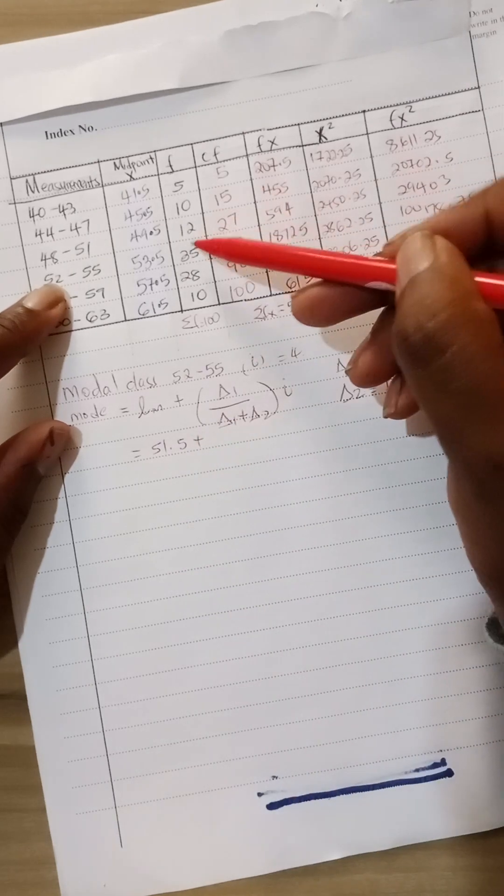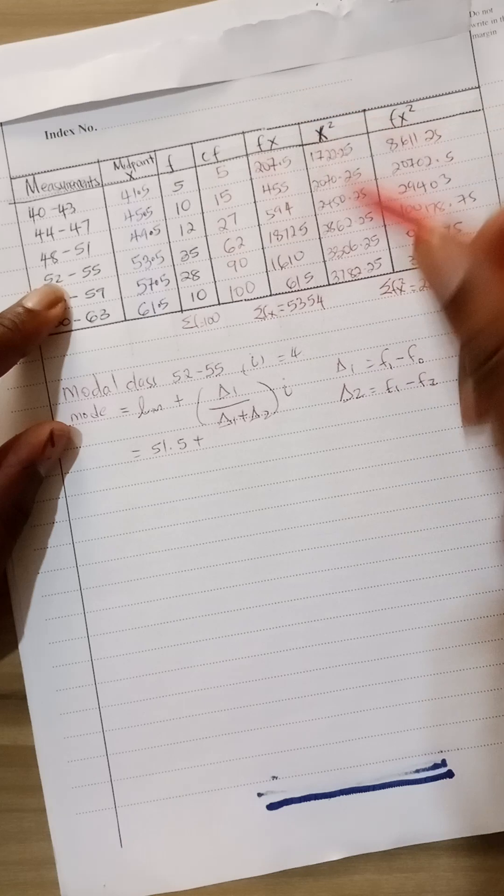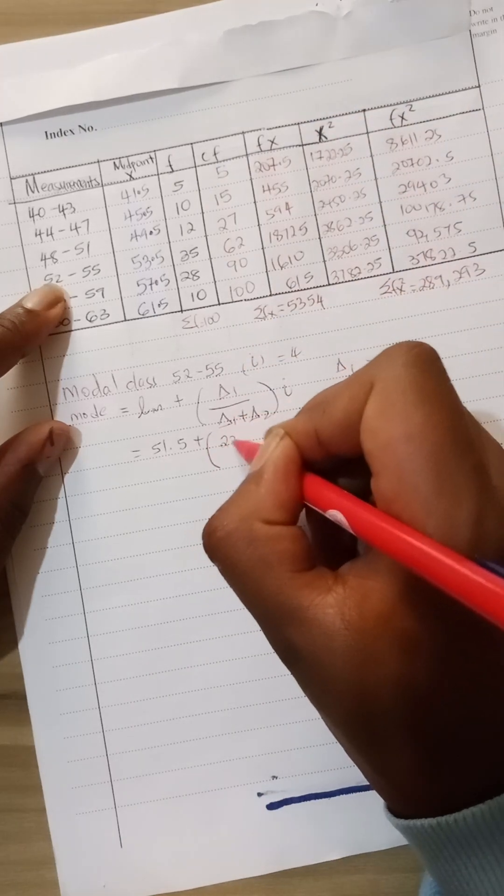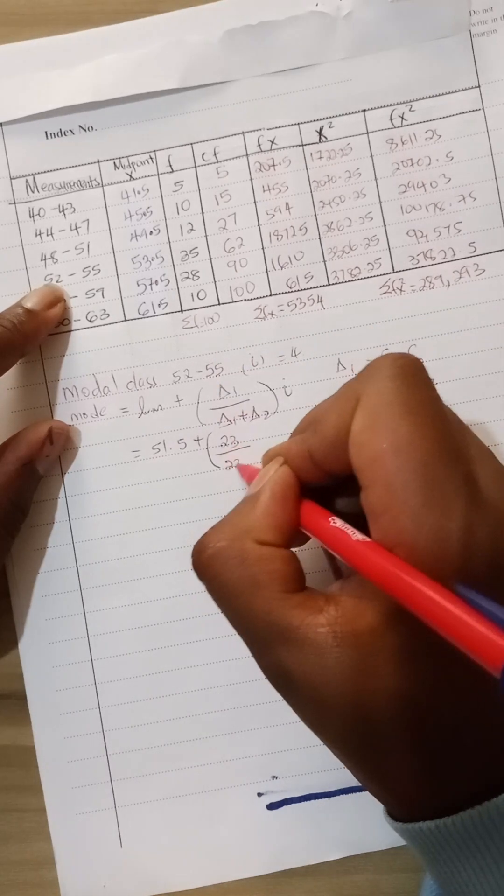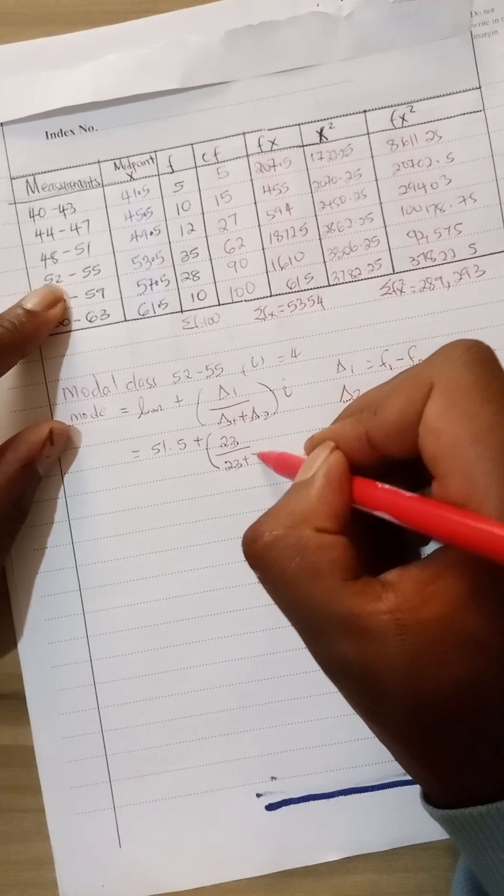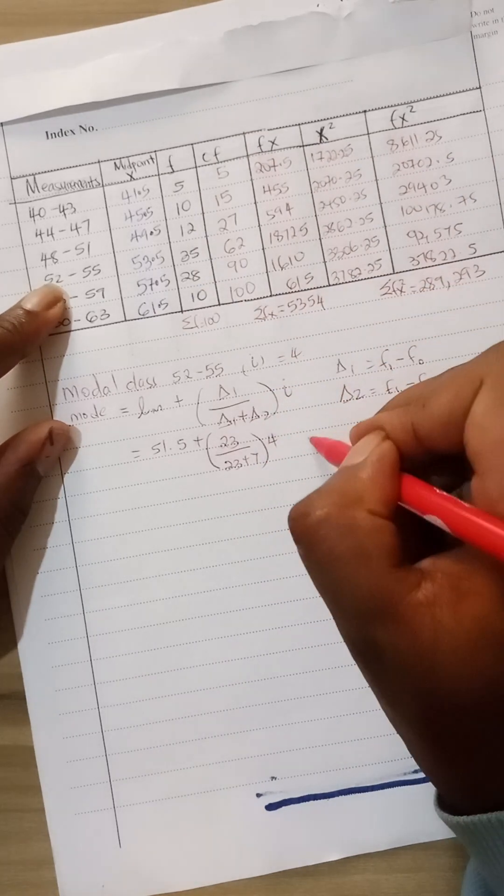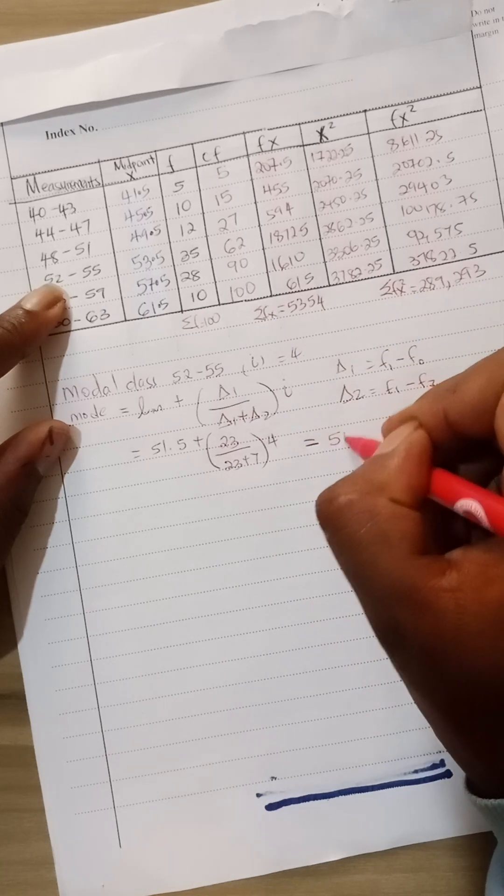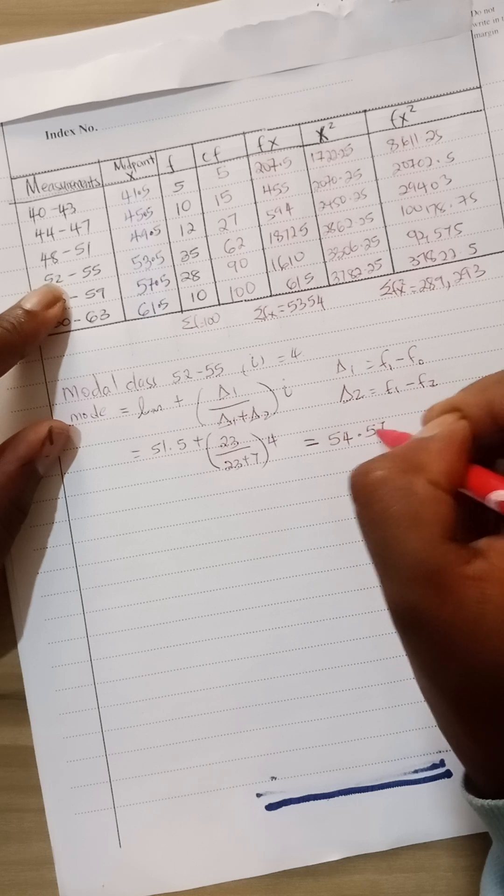Plus, now 35 minus 12 is basically 23, all over 23 plus 35 minus 28 is 7, multiplied by the class width. So this one, if you work out, you'll get 54.57.